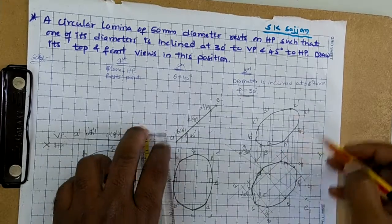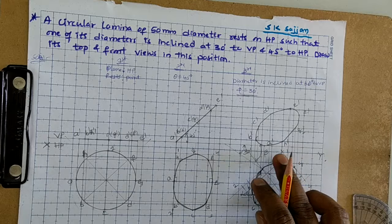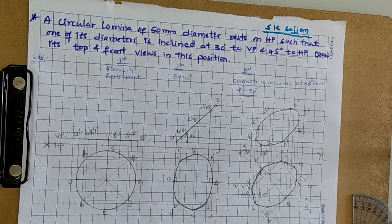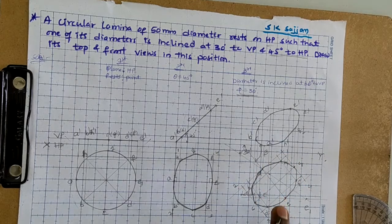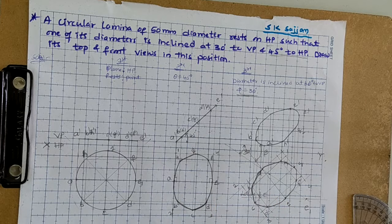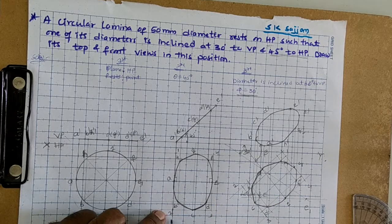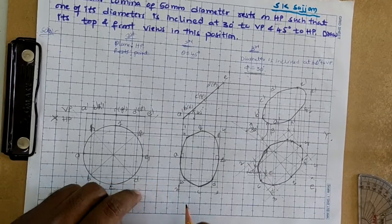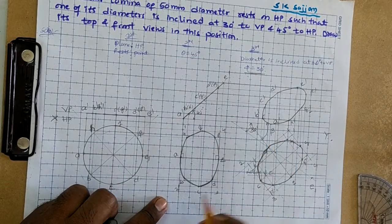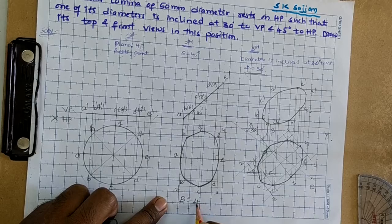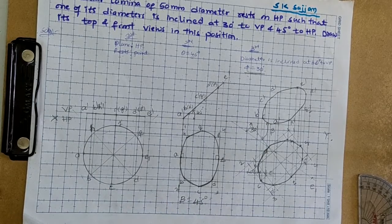This is the required front view. We also need to find beta — by measuring, we find that beta is equal to 45 degrees. Thank you.